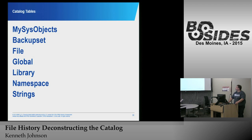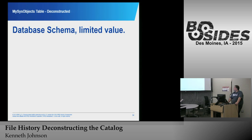Our catalog tables are: MySys Objects, Backup Set, File, Global, Library, Namespace, and Strings. Strings is pretty much the only one that is what it sounds like — it contains file names and paths. The MySys Object is basically our data schema; there is very limited information in there from an analyst's perspective.